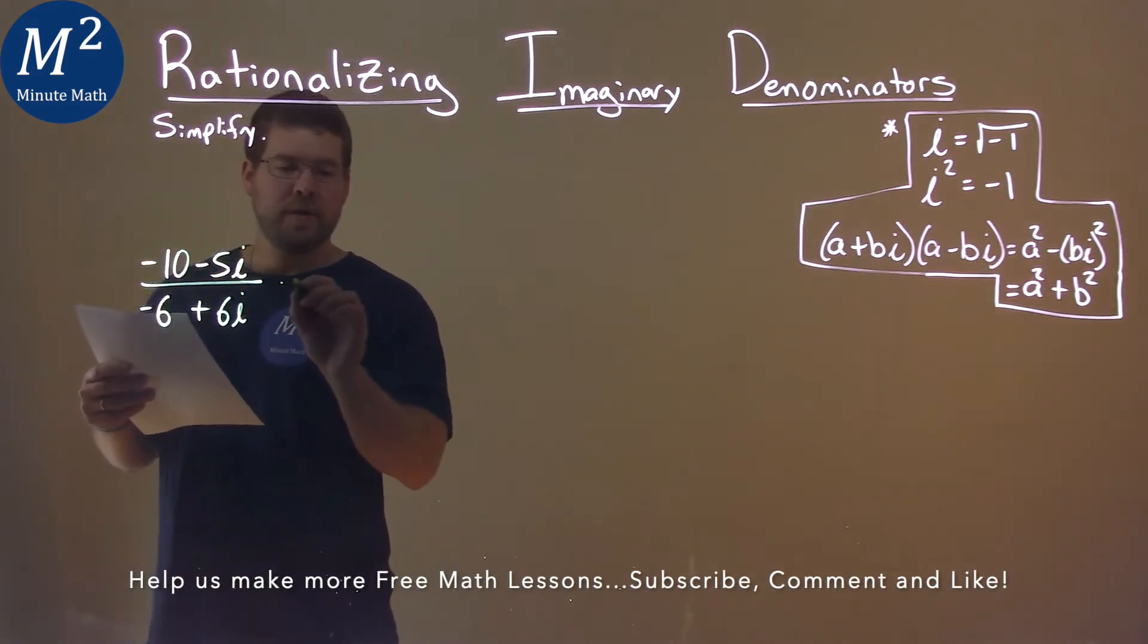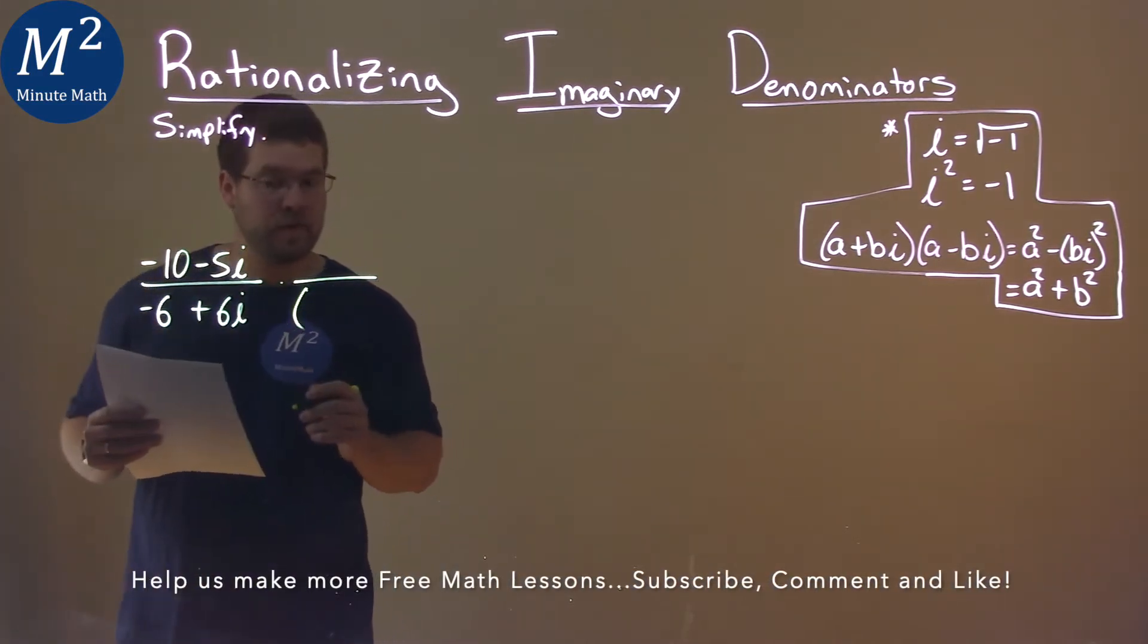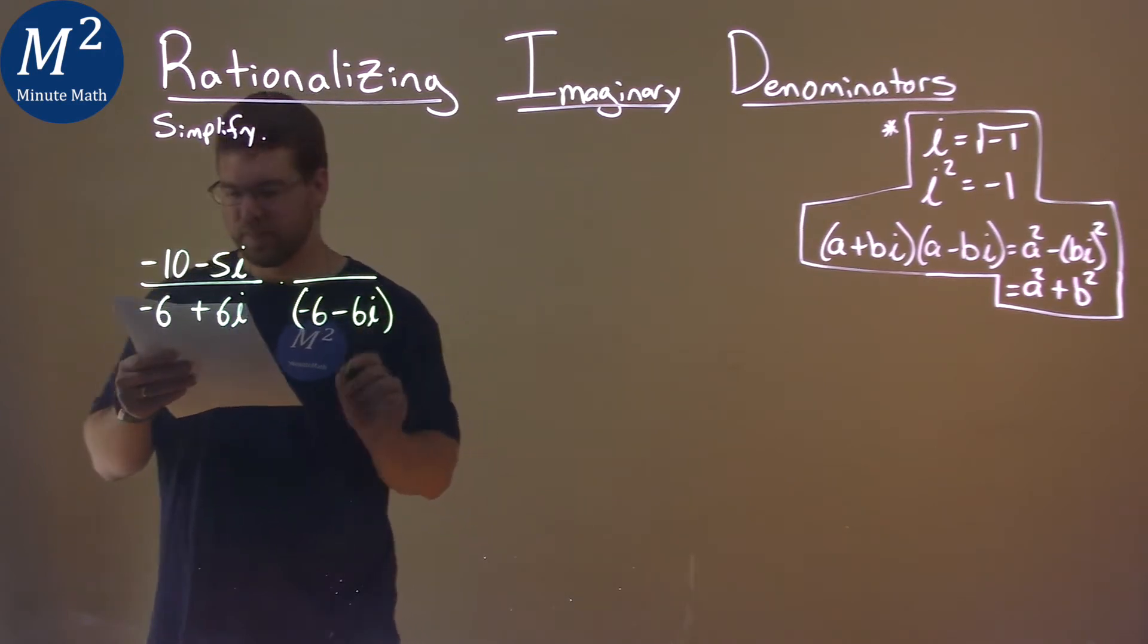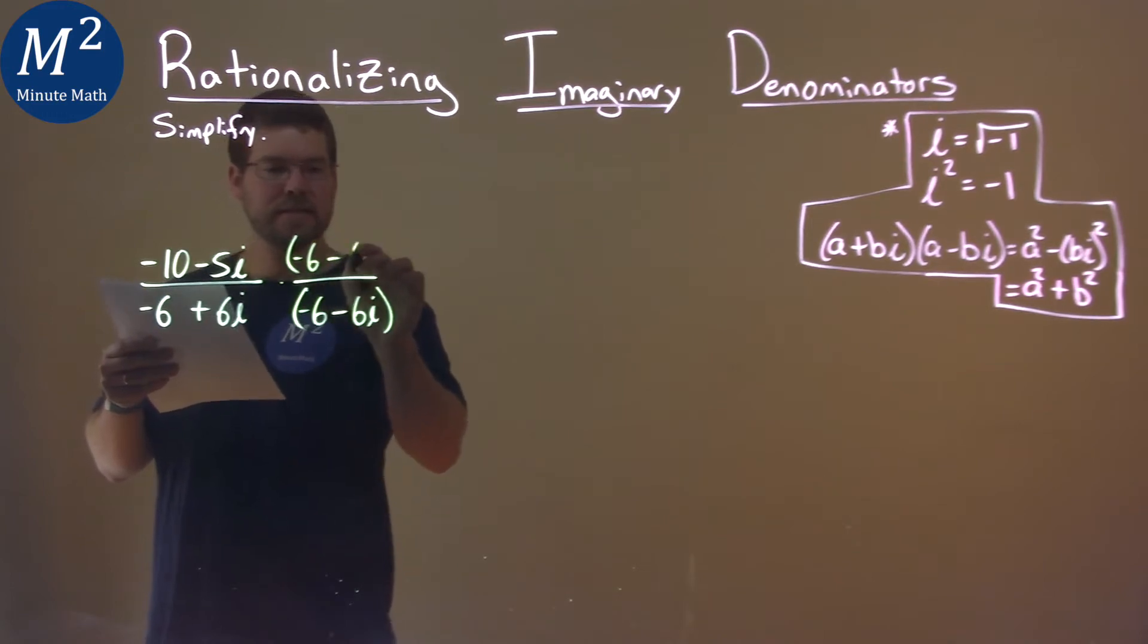To get i out of the denominator, I need to find the denominator's complex conjugate, which is negative 6 minus 6i. We're going to multiply the numerator as well by this, negative 6 minus 6i.